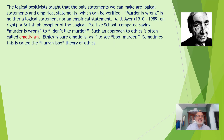The logical positivists taught that the only statements we can make are logical statements and empirical statements which can be verified. 'Murder is wrong' is neither a logical statement nor an empirical statement. A.J. Ayer, 1910 to 1989, a British philosopher of the logical positivist school, compared saying 'murder is wrong' to simply saying 'I don't like murder.' Such an approach to ethics is often called emotivism — ethics is pure emotions.